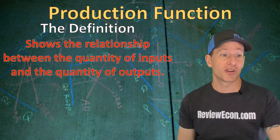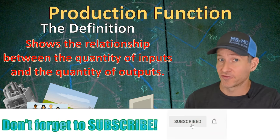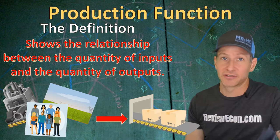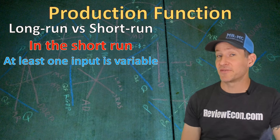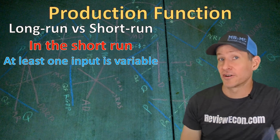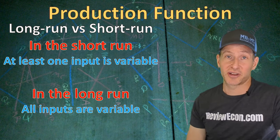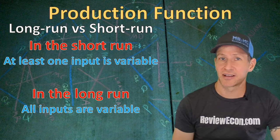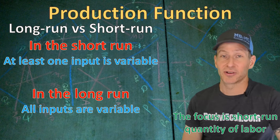The production function shows us the relationship between different quantities of inputs and different quantities of outputs for a firm. As we change the amount of physical capital, labor, or land, we will get different quantities of output. You can have both long run or short run production functions. In the short run, at least one input is going to be variable — you can hire more workers or fewer workers, and that will change the quantity of output. In the long run, all inputs are variable. A business can't change the amount of heavy machinery in the short run, but it can get new physical capital in the long run. For the AP microeconomics exam, we will focus on changes in the quantity of labor and how those changes impact firms' output.